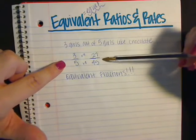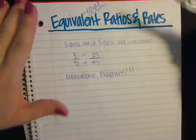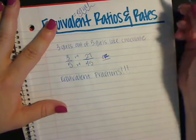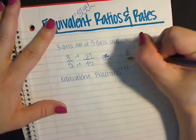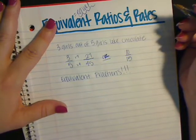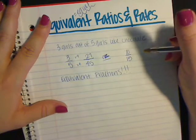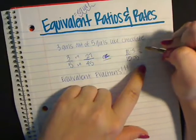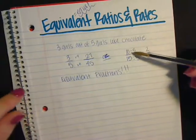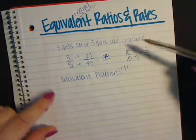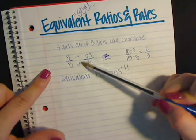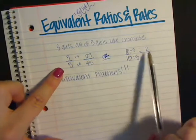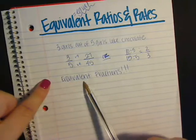To find an equivalent ratio or rate, multiply or divide both top and bottom by the same number. For example with division: if I gave you 10 out of 15 girls like chocolate, and I divided both by 5 — just like simplifying — that gives me 2 thirds. So 10 out of 15 is equivalent to 2 out of 3.